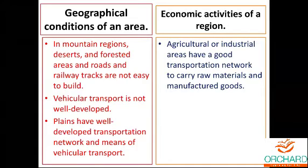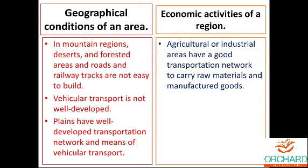The next factor is economic activities of a region. Raw materials are taken to places where they are turned into finished goods, and these finished products are then transported to places where they are sold or consumed by people — all done to make money. Agricultural and industrial areas have good transportation networks for the movement of goods and services from one place to another.